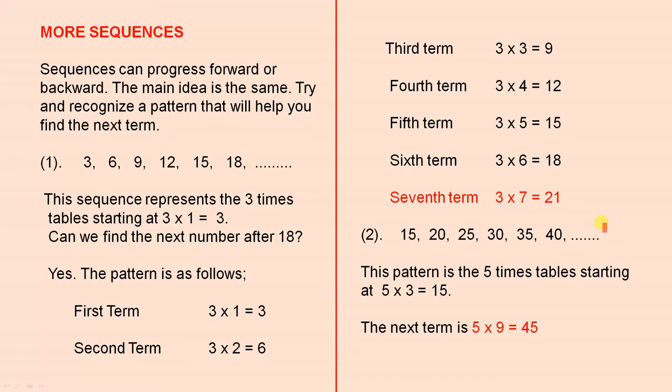Question two: fifteen, twenty, twenty-five, thirty, thirty-five, forty, etcetera. This pattern is the five times tables starting at five times three equals fifteen. So the next term is five times nine equals forty-five. Of course that's five threes, five fours, five fives, five sixes, five sevens, five eights, and that's five times nine.